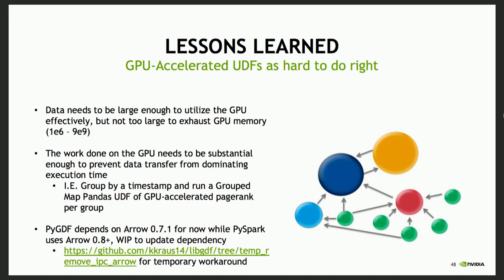A good example of a heavyweight workload is if you have time series data that could be represented in a graph — you can group by a timestamp and then run a grouped map UDF of some kind of graph algorithm like PageRank per grouping, building a time series of graph features. Graph analytics is a very hard, compute-heavy problem. The last lesson is that PyGDF and LibGDF currently depend on Arrow 0.7.1 while PySpark needs Arrow 0.8 plus. There's work in progress to update that dependency. My GitHub repo has the code that's offending — it's the CUDA IPC implementation to allow handing the GPU DataFrame between processes — so if you're looking for a workaround, you can go there.